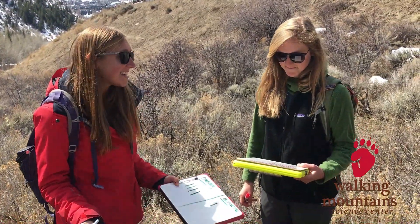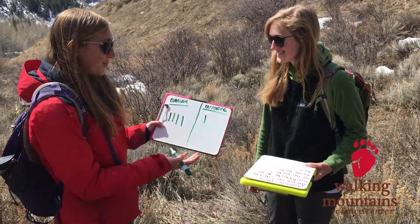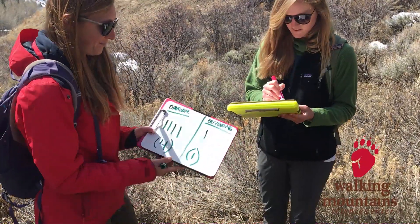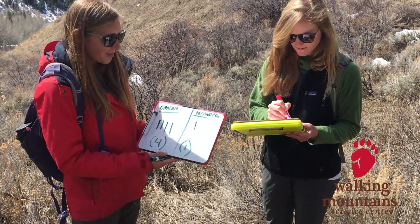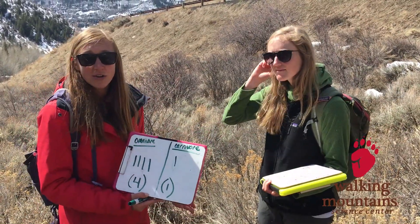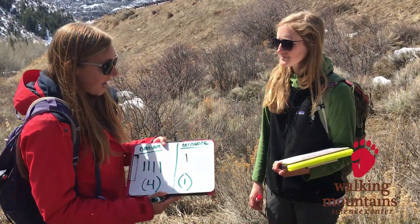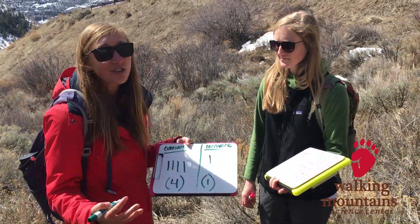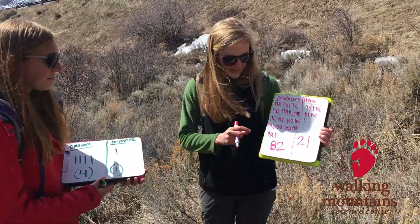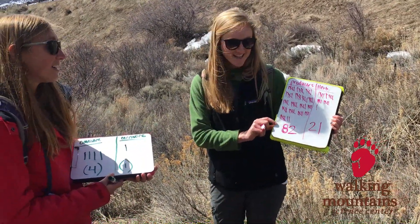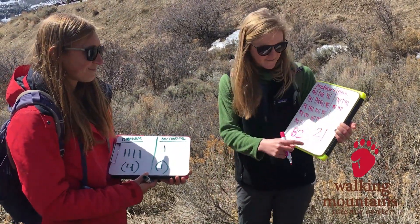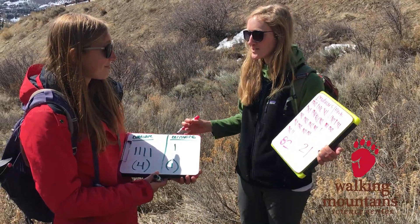Can you believe it's been five minutes already? I found so much stuff. You really found a lot more than I did. Should we add them all up and see our totals? I had four omnivores — most of those were actually crows that I spotted and heard flying over. Crows actually eat plants and other animals. And I found one sign of a carnivore — all that fur on the ground that was probably from a mountain lion. Rebecca, what did you find? I found 82 producers. And for herbivores, I found 21 — those were mostly little snail shells.